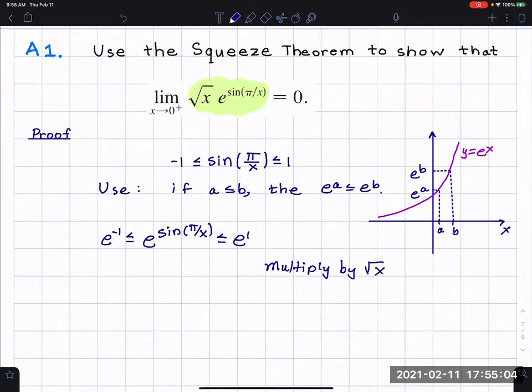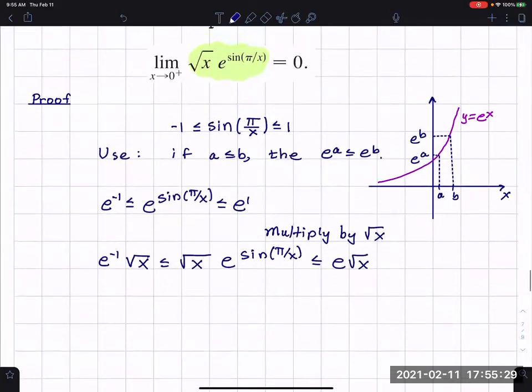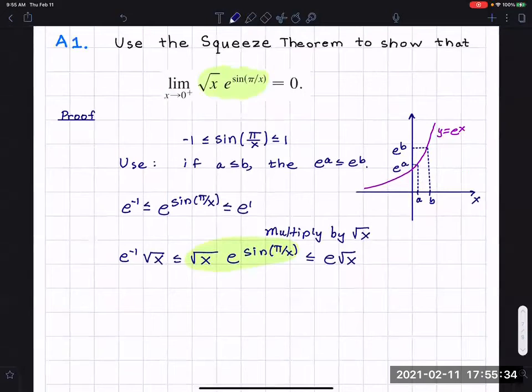Radical x is never negative, so it will not reverse the direction of the inequality. So I have e to the minus one, which is just a constant times radical x is less than or equal to radical x e to the sine pi over x. We don't have to reverse the direction of the inequality because radical x is never negative. So now we have that same function that we're trying to find the limit. And now we work on these outside functions.